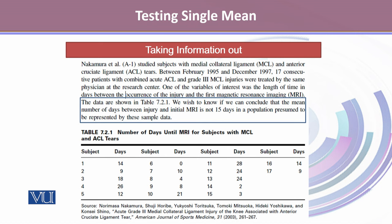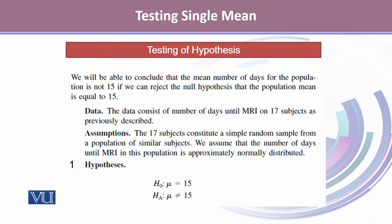From the problem statement, we want to know if we can conclude that the mean number of days between injury and initial MRI is not 15 days, in a population presumed to be represented by these sample data. The key phrase is 'not 15 days,' meaning it is not equal to 15 — it could be more or less than 15 days. The data consists of the number of days until MRI on 17 subjects. If we reject the null hypothesis that the population mean equals 15, we conclude the mean is different from 15.